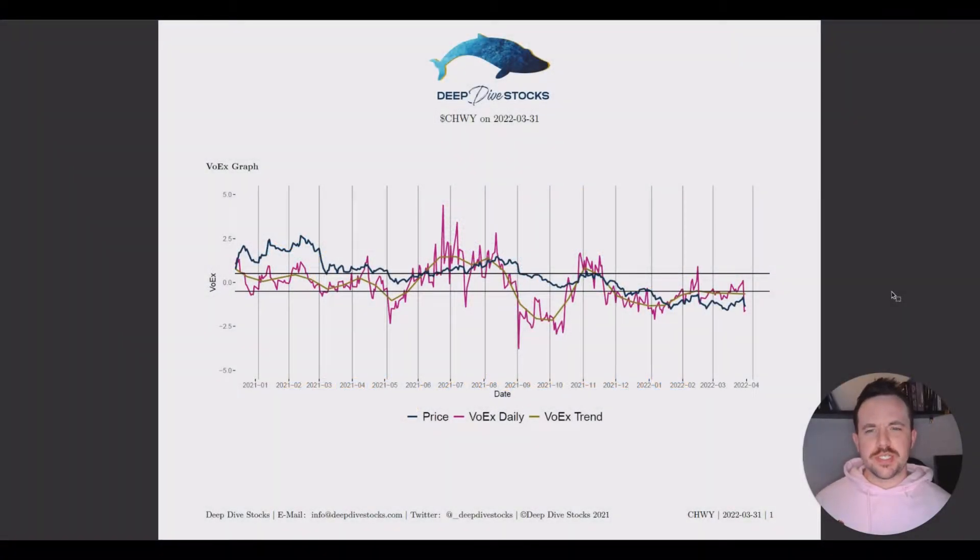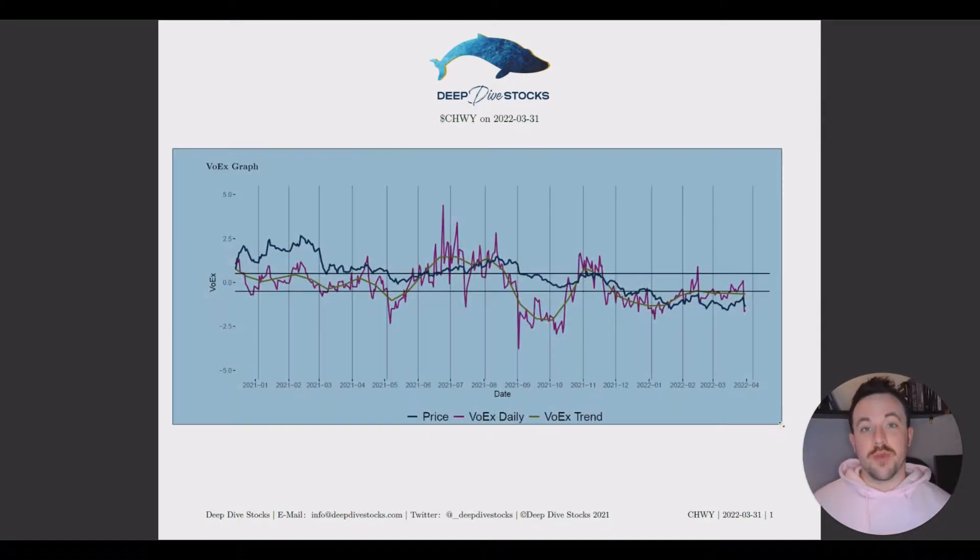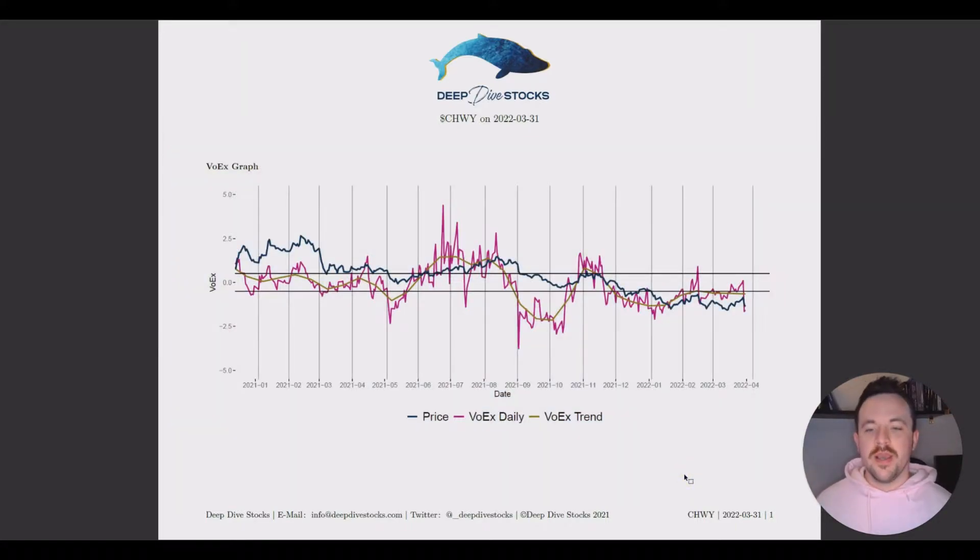Chewy has been on a pretty consistent decline in price recently, and it doesn't seem like it's going to be stopping anytime soon. So let's take a look at VOEX. If you haven't, I definitely recommend checking out my video on VOEX on my channel. It goes over what it measures, what it indicates, but the gist of it is when VOEX is outside of these two horizontal lines, that means the stock is unstable. And we're going to see with Chewy that this instability is pretty pronounced. So this is the VOEX graph from today, March 31st. But if we go back all the way until the beginning of 2021, there's some cool things about VOEX that we should notice.